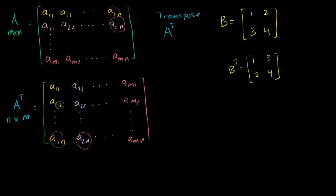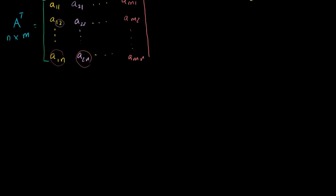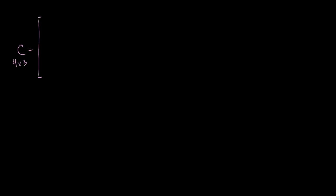Let me do one that might be a little more challenging — I think this will make things clear. Let's say I have the matrix C, and let me make it a pretty big matrix: a 4 by 3 matrix. So the entries are: first row 1, 0, −1; second row 2, 7, −5; third row 4, −3, 2; and fourth row −1, 3, 0. That is my matrix C.